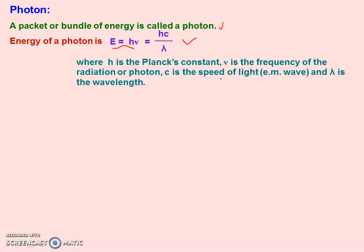In the VIBGYOR spectrum, red has the highest wavelength, which means it has the lowest energy photons. Whereas violet has a lower wavelength, meaning higher frequency. So the energy packet of violet will have higher energy.